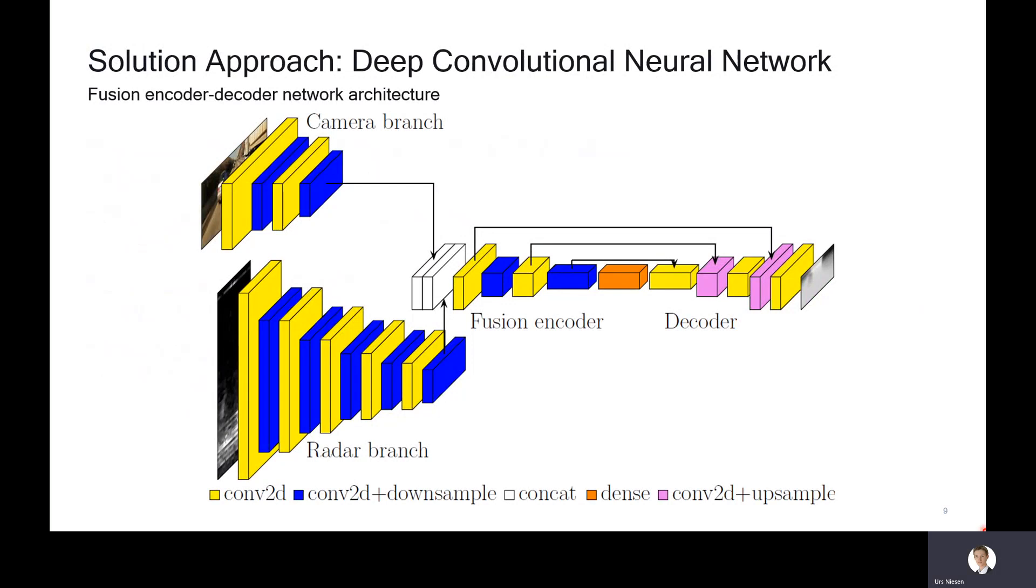This is our approach. We use a deep convolutional neural network in the fusion encoder-decoder network architecture. The two measurement images come in on the left: on the top the camera image, on the bottom the radar image. They go through a separate camera branch and a radar branch, consisting of 2D convolutions and downsampling steps. Then their outputs are concatenated and put into a fusion encoder branch with skip connections. There's a dense layer in the middle, and then there's a decoder branch that outputs the final 3D depth reconstruction map.